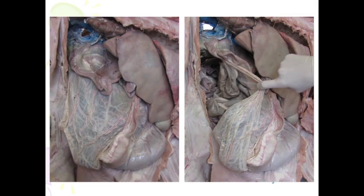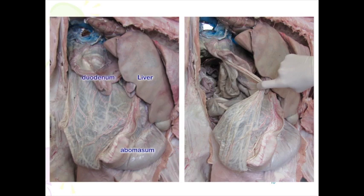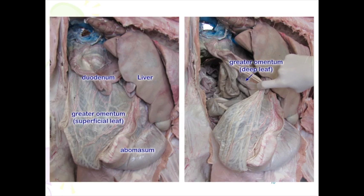In these images here it shows once again the liver, the omasum, the descending duodenum, and the superficial leaf of the greater omentum. Here we've reflected that — we grabbed that caudal border and pulled it forward. When you're doing abdominal surgery in the bovine, you don't want to cut the omentum; you want to be gentle in your handling of it because it could very easily create adhesions. Here's the viscera in the supraomental recess.